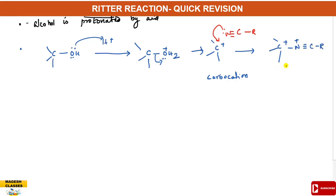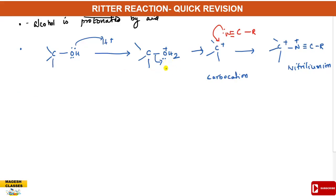The product of the carbocation attacking the nitrile is the nitrileum ion. So first, the carbocation approaches and is attacked by the nitrile to form the nitrileum ion. The resulting nitrileum ion is then captured by water molecules. The water molecule, which is a protonated alcohol, captures the nitrileum ion.